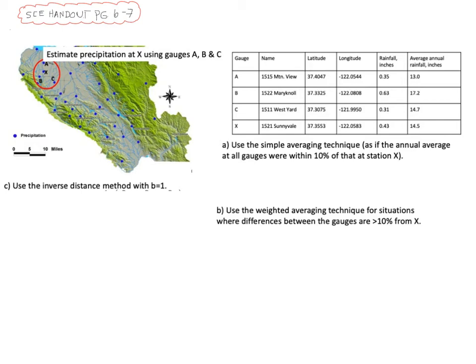So this first example that I am going to do for this module is to estimate rain at a gauge that might have missing data. In this example, which you can find in your handout on page six and seven, we are given the precipitation data at four gauges,